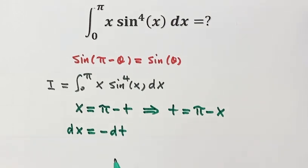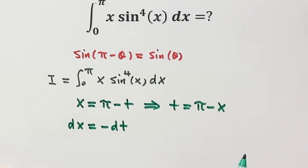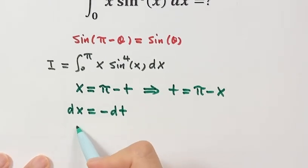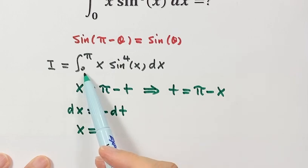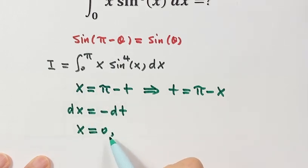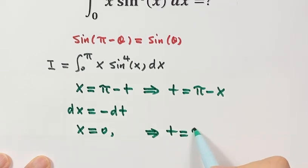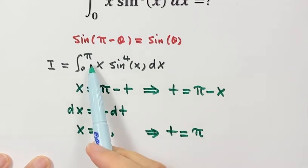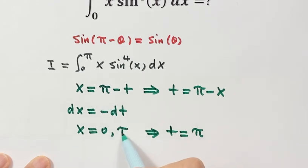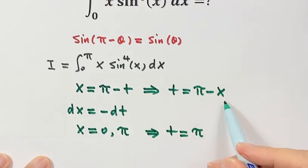Now let's figure out the lower and upper limits for the new variable. When x equals the lower limit 0, then t equals π. And when x equals π, the upper limit, t equals 0.